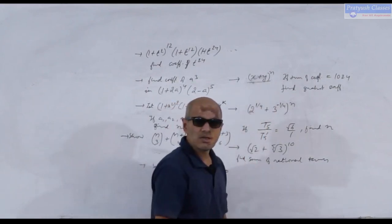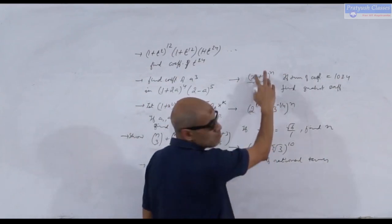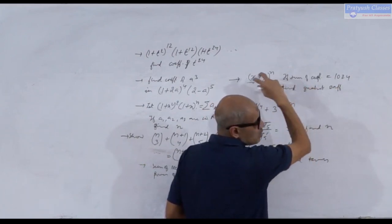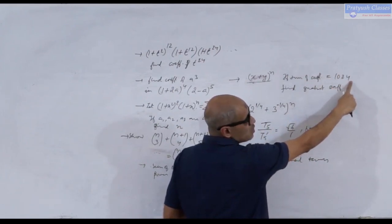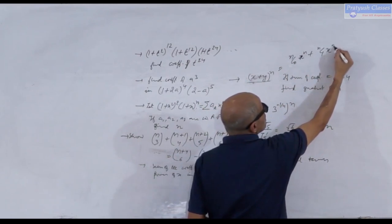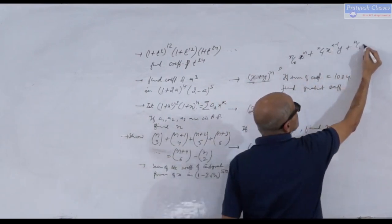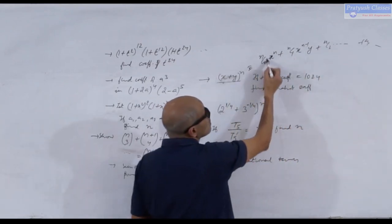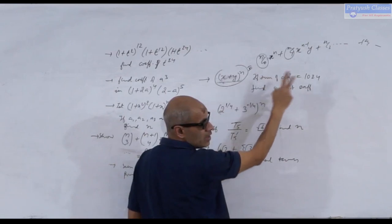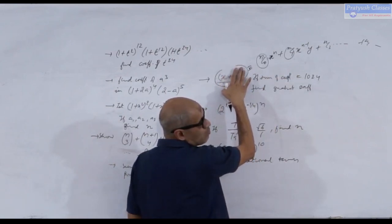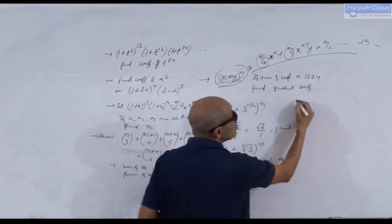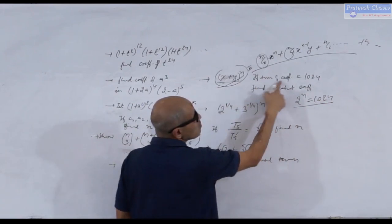Next problem: a binomial (x+y)ⁿ where n is a natural number. It is given that the sum of all its coefficients equals 1024. To find the sum of coefficients, substitute x=1 and y=1, giving (1+1)ⁿ = 2ⁿ. So nC0 + nC1 + nC2 + ... = 2ⁿ = 1024.